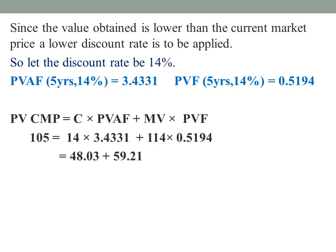Applying 14% for 5 years: 105 = 14 × 3.4331 + 114 × 0.5194, which gives Rs. 107.24. So at 15% we get Rs. 103.61, and at 14% we get Rs. 107.24. Higher discount rates give lower values; lower discount rates give higher values.